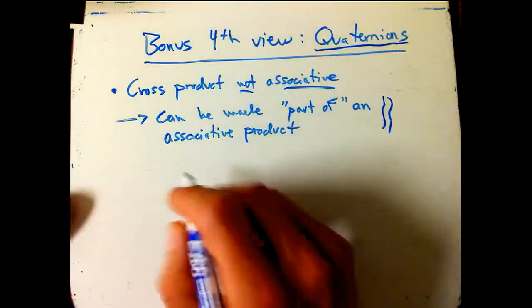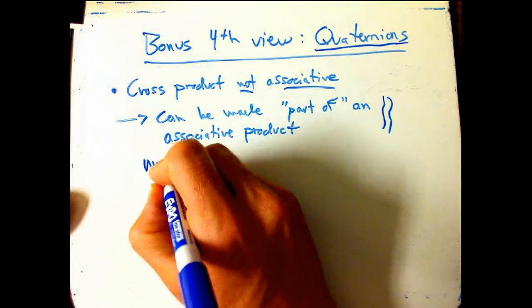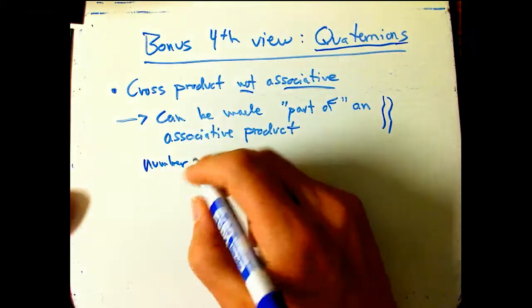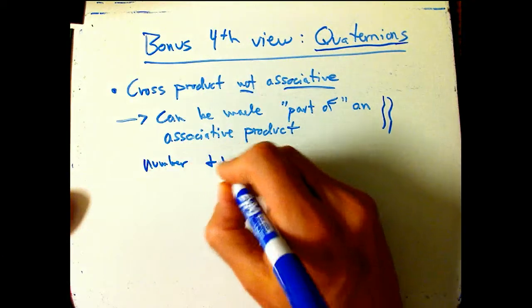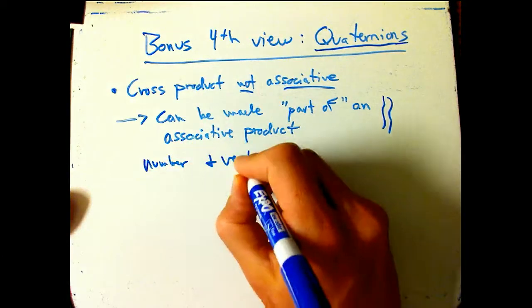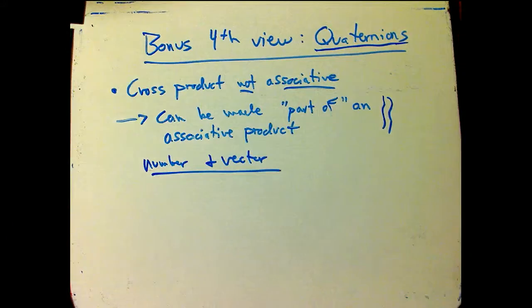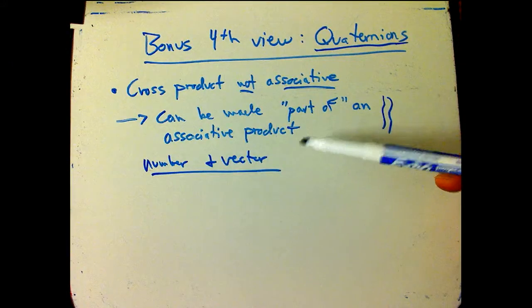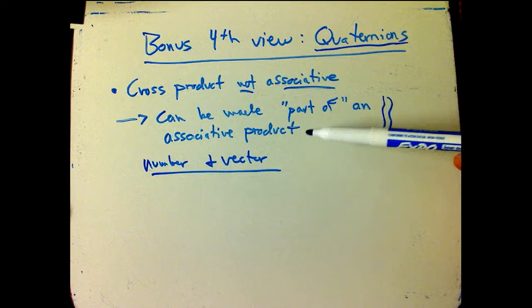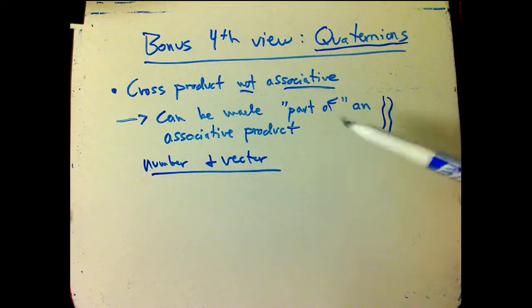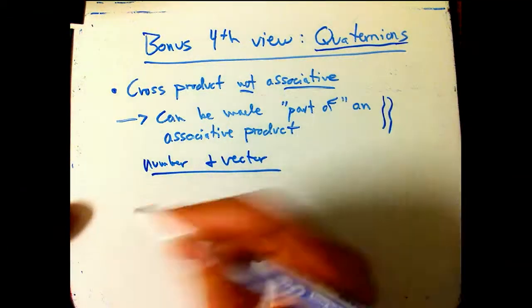So here's what we're going to do: we're going to combine numbers, or scalars basically, and vectors, and by combining those and having the right notion of product, we're going to have something that's associative. It generalizes the dot product, the cross product, and the product of complex numbers, all together.